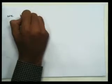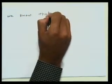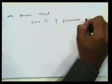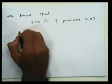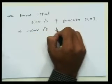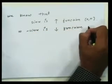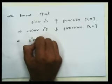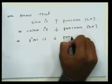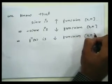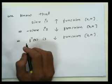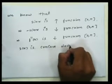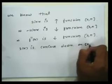We know that sin x is an increasing function in the first two quadrants, that means in the interval (0, π). This implies that -sin x is a decreasing function on (0, π). But f''(x) = -sin x, so f''(x) is decreasing on (0, π). So using the second derivative test for concavity, f(x) is concave down on the interval (0, π).